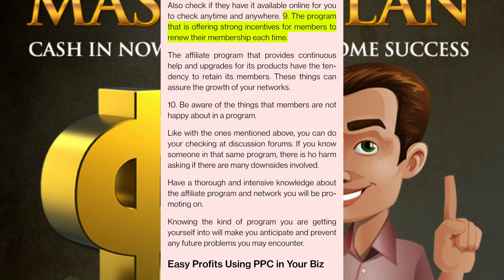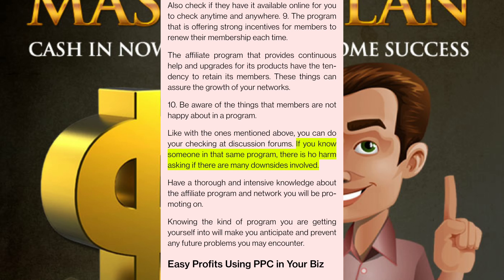Nine: choose a program that offers strong incentives for members to renew their membership each time — affiliate programs that provide continuous help and upgrades for their products tend to retain members and assure the growth of your networks. Ten: be aware of things that members are not happy about in a program — check discussion forums. Having thorough and intensive knowledge about the affiliate program and network you will be promoting means you can anticipate and prevent any future problems you may encounter.